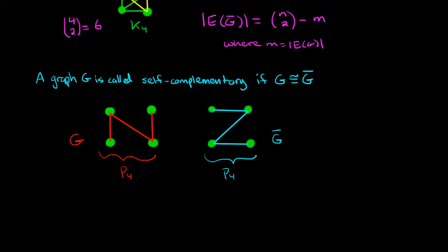Another example is if we take five vertices and we take one graph to be this five cycle and the complement graph is then this five cycle. So both of these graphs are isomorphic to the five cycle c5, and thus this is another example of a graph which is self-complementary.